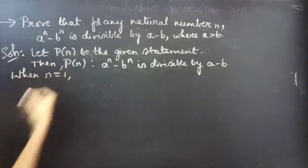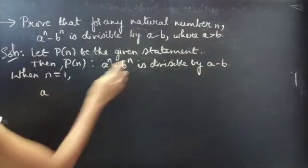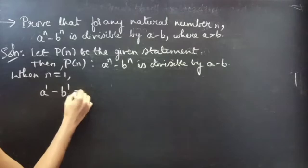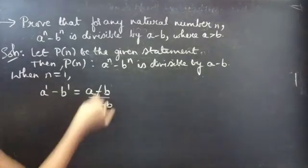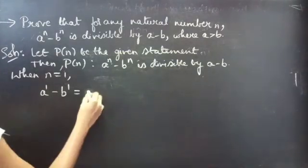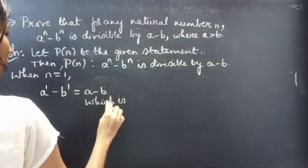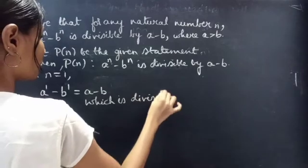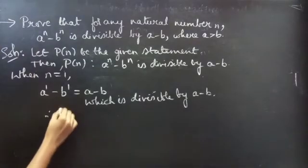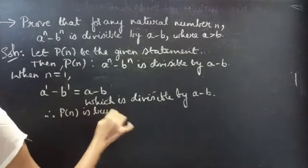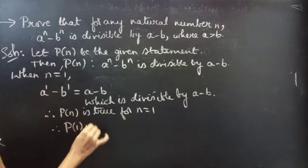When n equals to 1, put n equals to 1 in the given statement. You will get a minus b, which is divisible by a minus b. Therefore P of 1 is true.